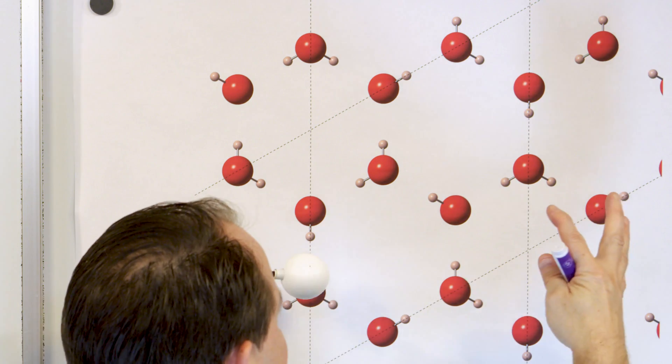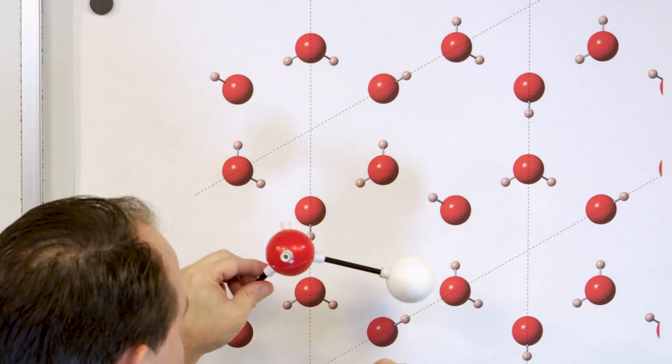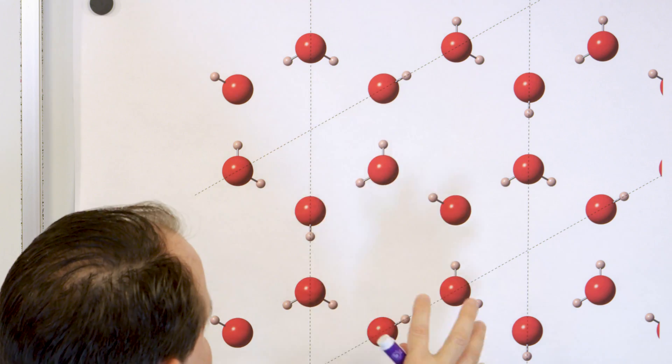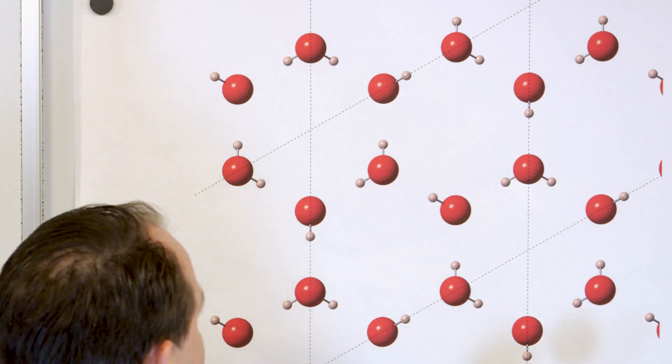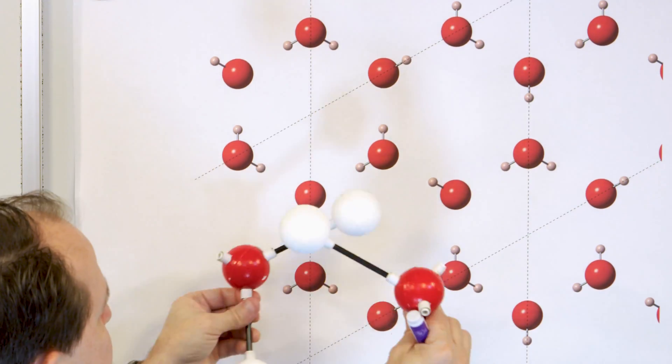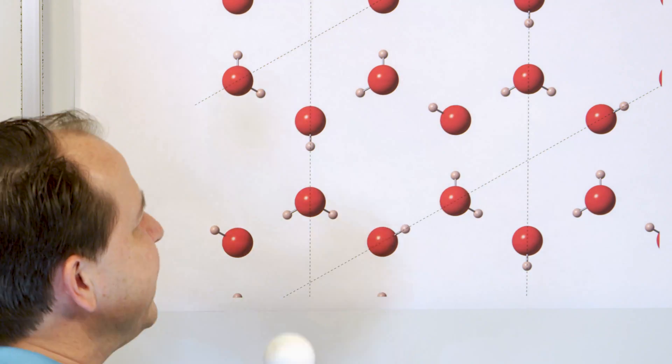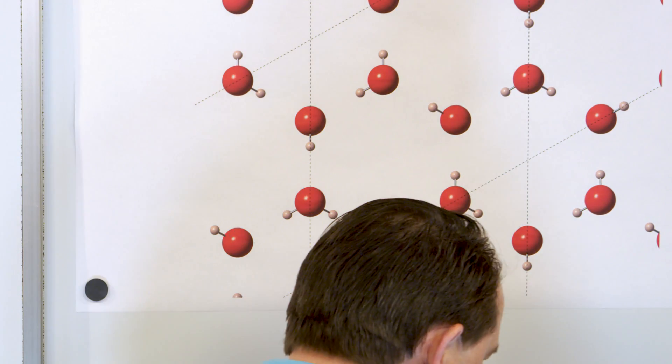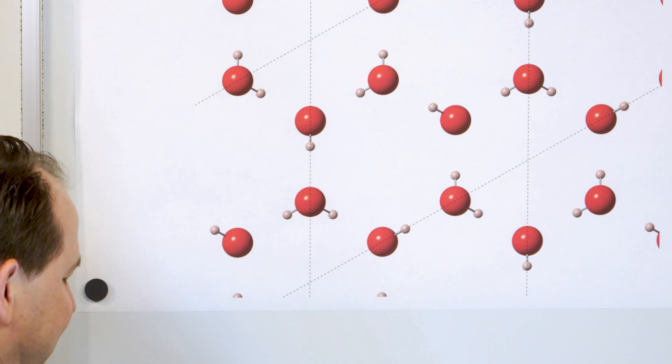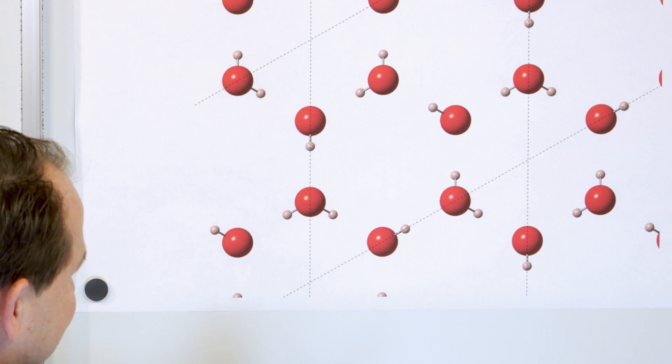They're attracted because of what we talked about a minute ago, because it's polar. When the thermal energy, when we cool it down and they stop moving so much, then they get locked into this position. But these atoms are farther apart. These molecules are farther apart than water can exist in the liquid state. And so, ice expands. This is a visual representation of why ice expands, because it gets locked into this lattice like this.